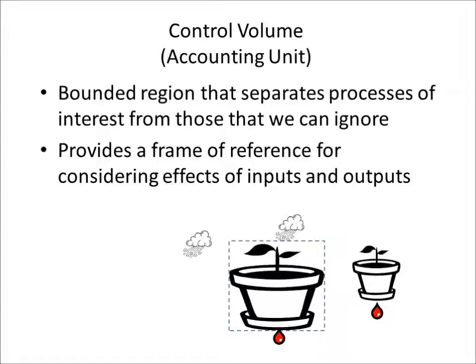In the context of watershed analysis, a watershed boundary serves as our control volume. There are complexities in determining how deep into the soil and how far into the atmosphere the control volume should extend. Each kind of control volume isolates the system for a specific analysis — for example, if the control volume considers only the soil, then everything above and below the soil surface is treated as a source or sink for our system. Understanding the control volume concept is essential for applying the water balance equation.